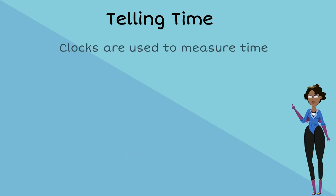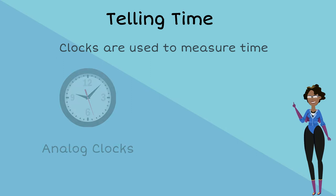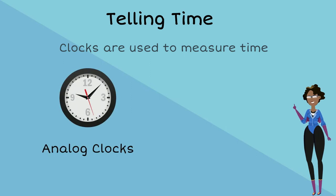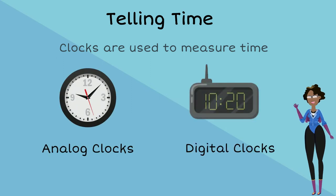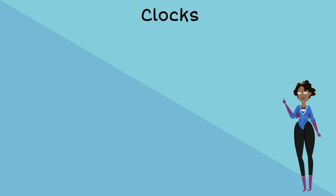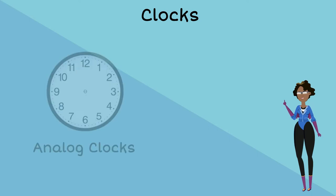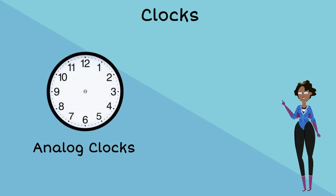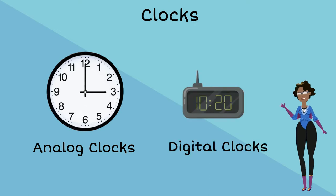Clocks are used to measure time and there are two different types of clocks that show the time, which are analogue clocks and digital clocks. Analogue clocks have two hands, a long and a short hand, while digital clocks have numbers only.